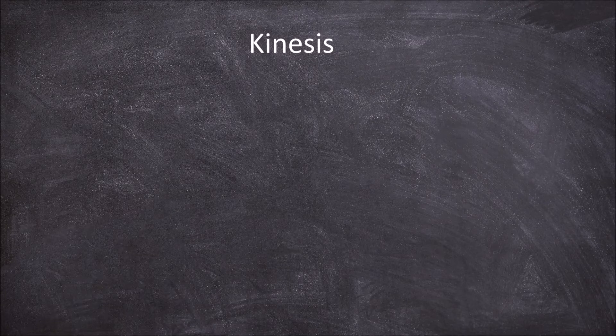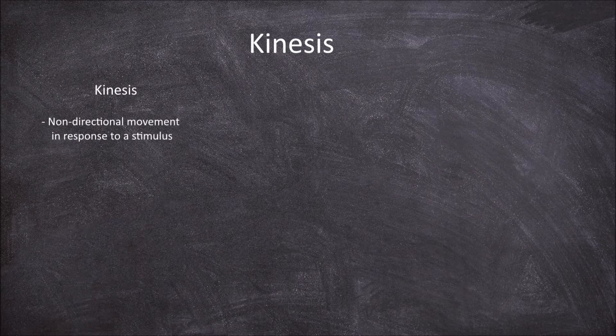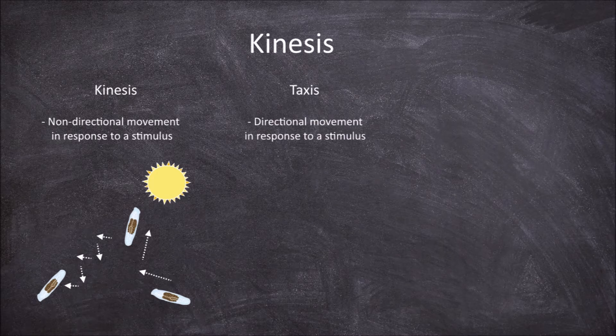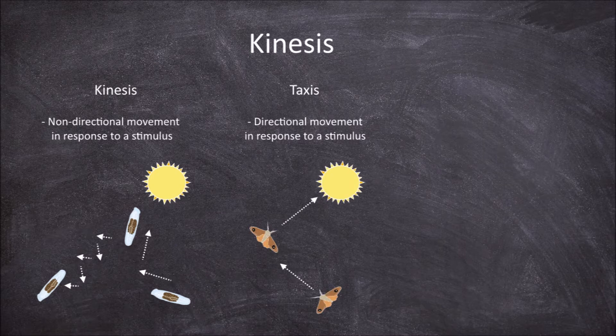In this video we're going to look at the form of animal movement known as kinesis. Kinesis is the non-directional movement of an organism in response to a stimulus. It differs from taxis, which is a directional movement of an organism in response to a stimulus.